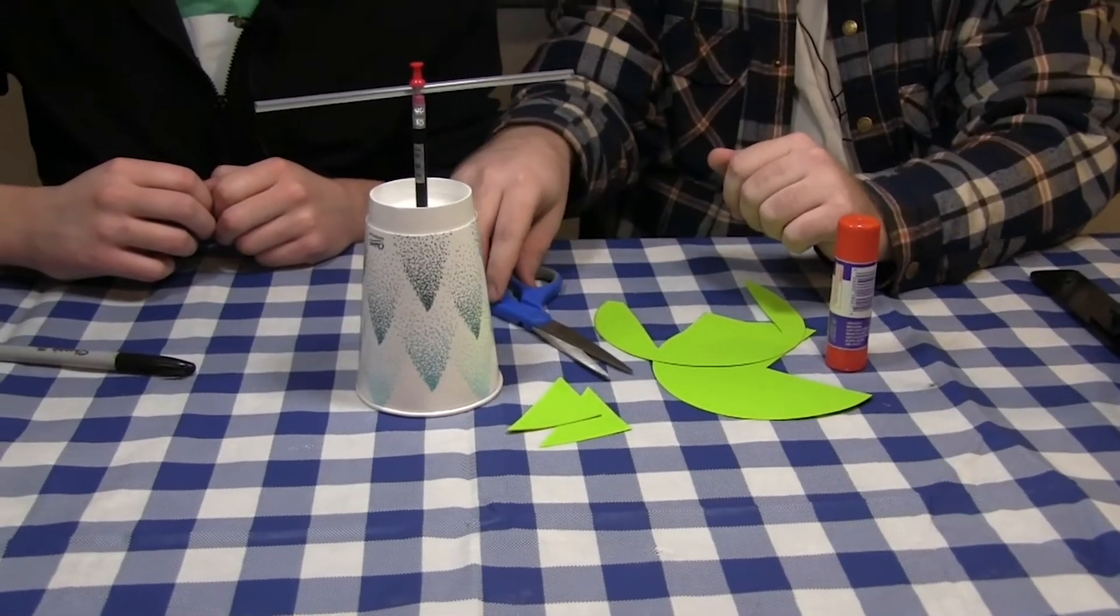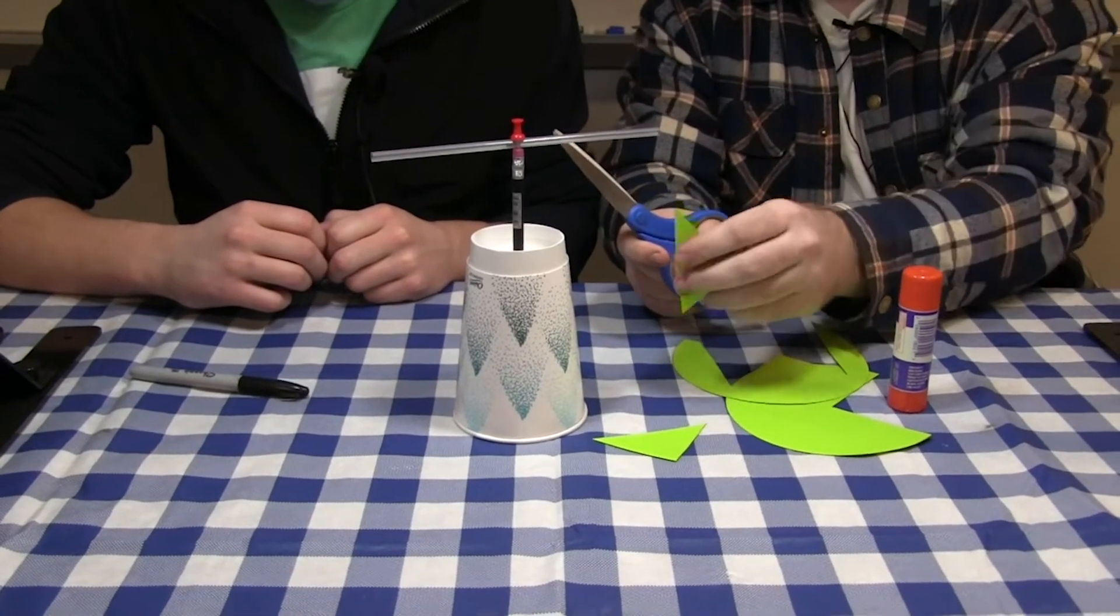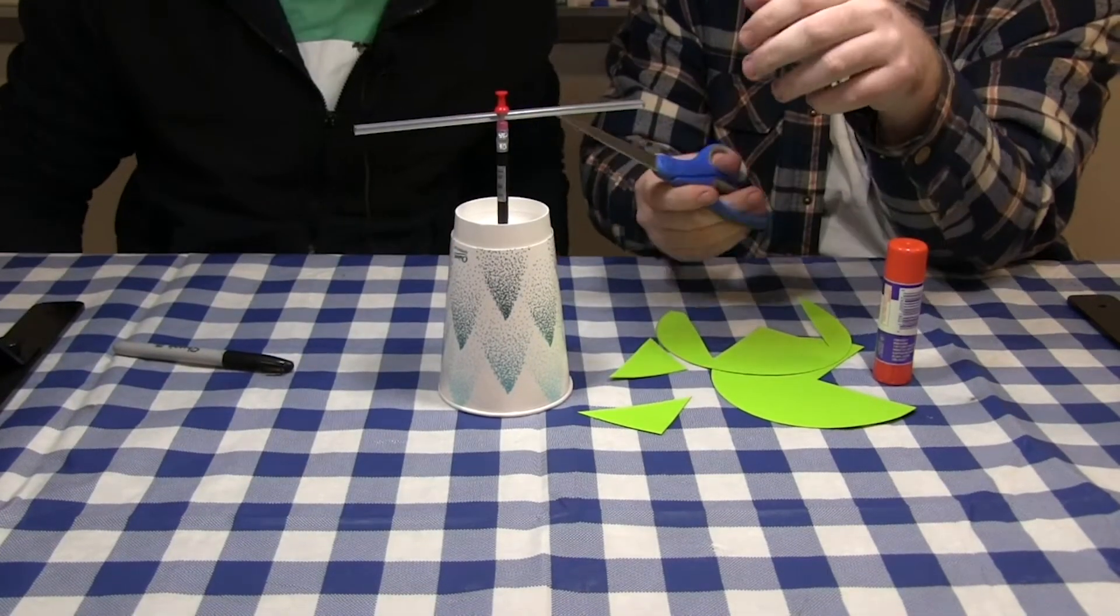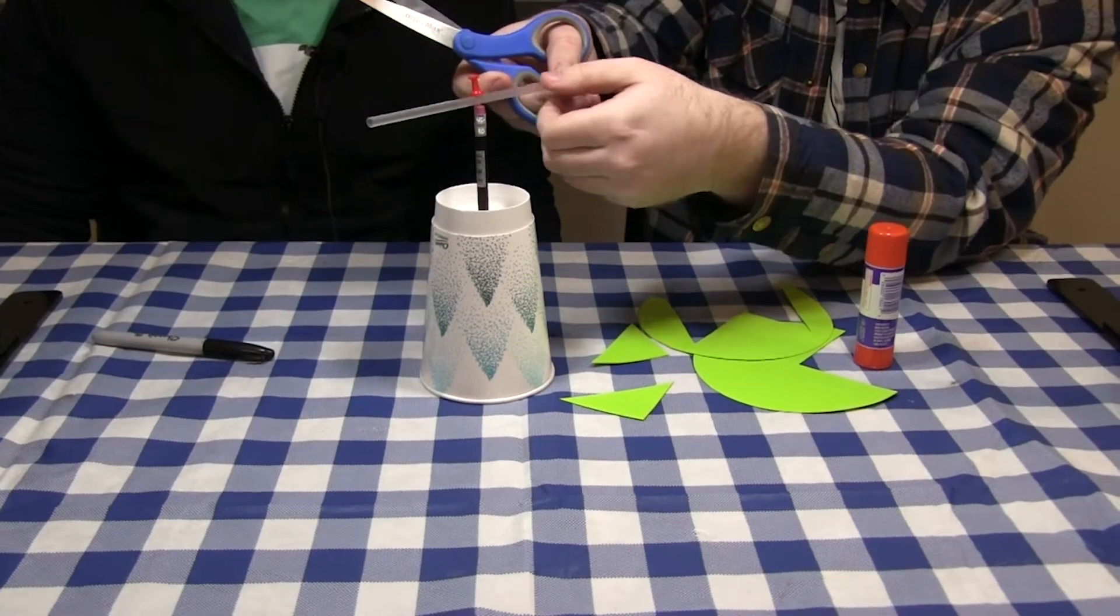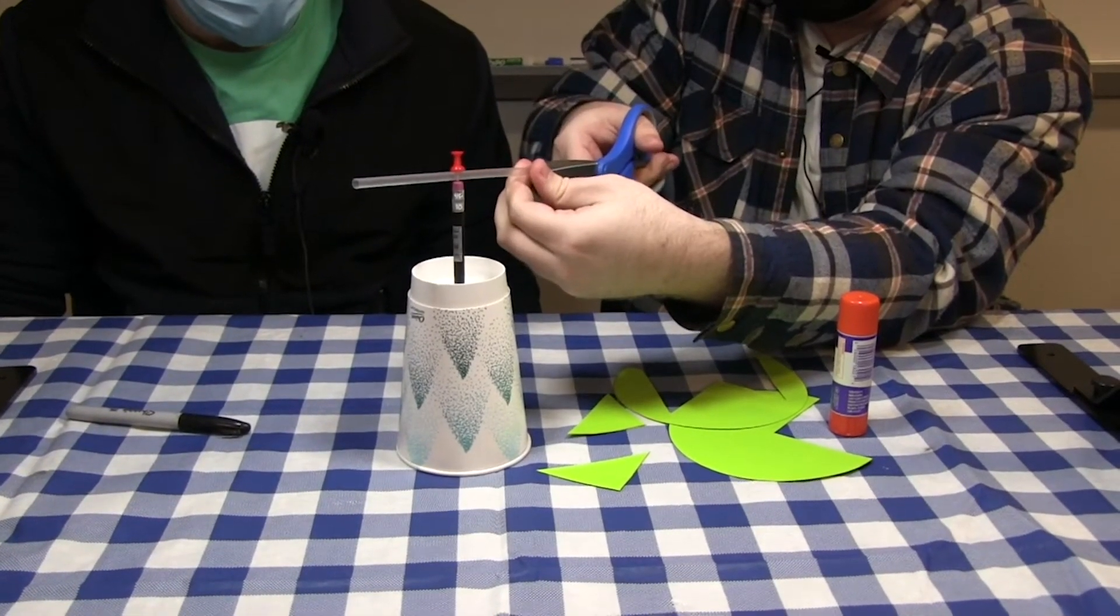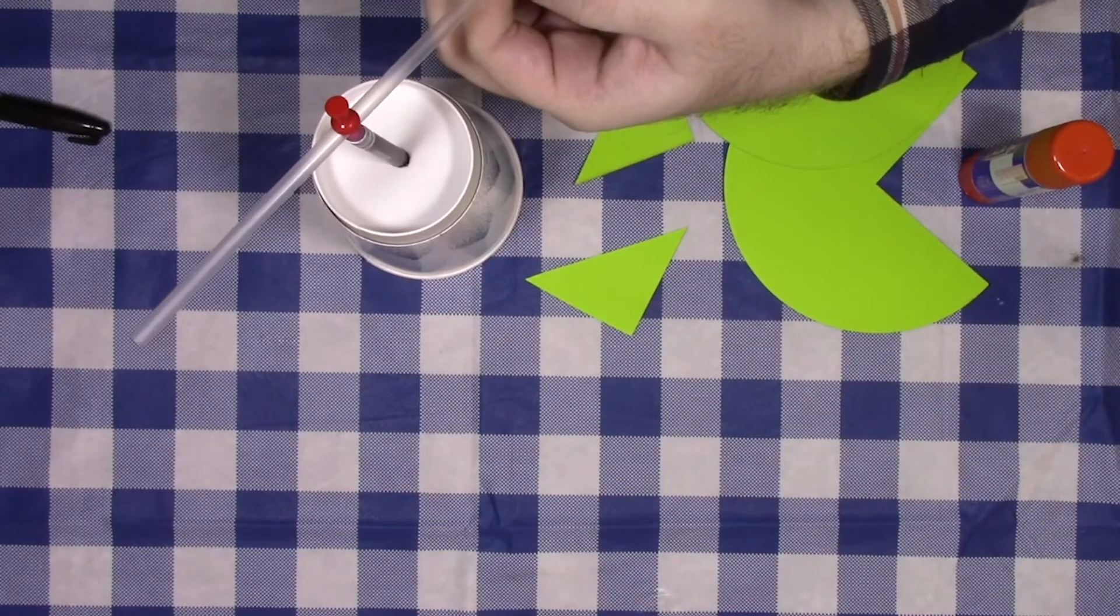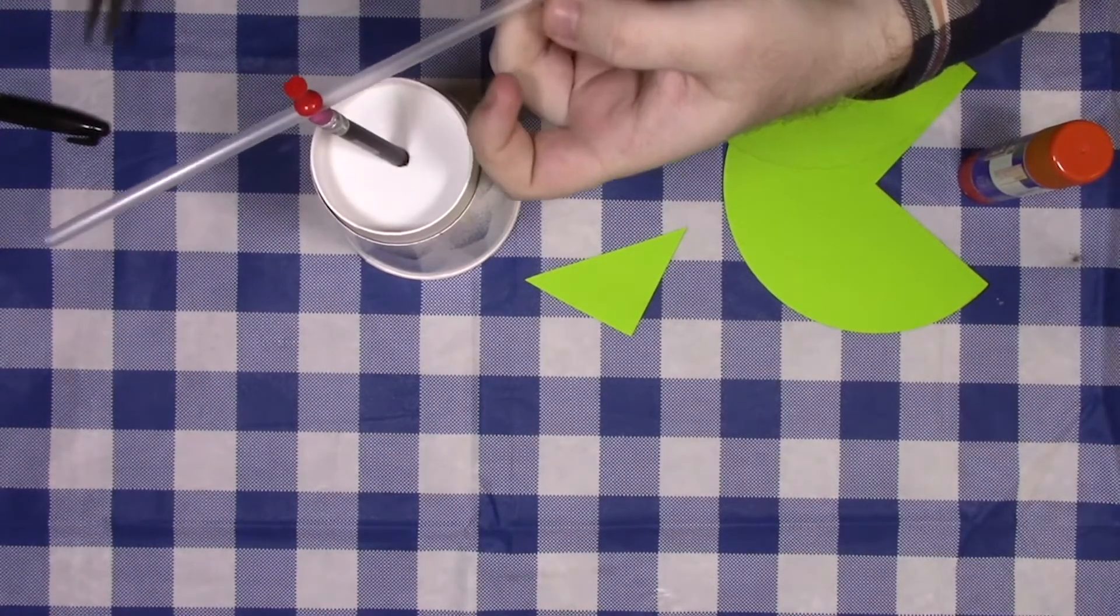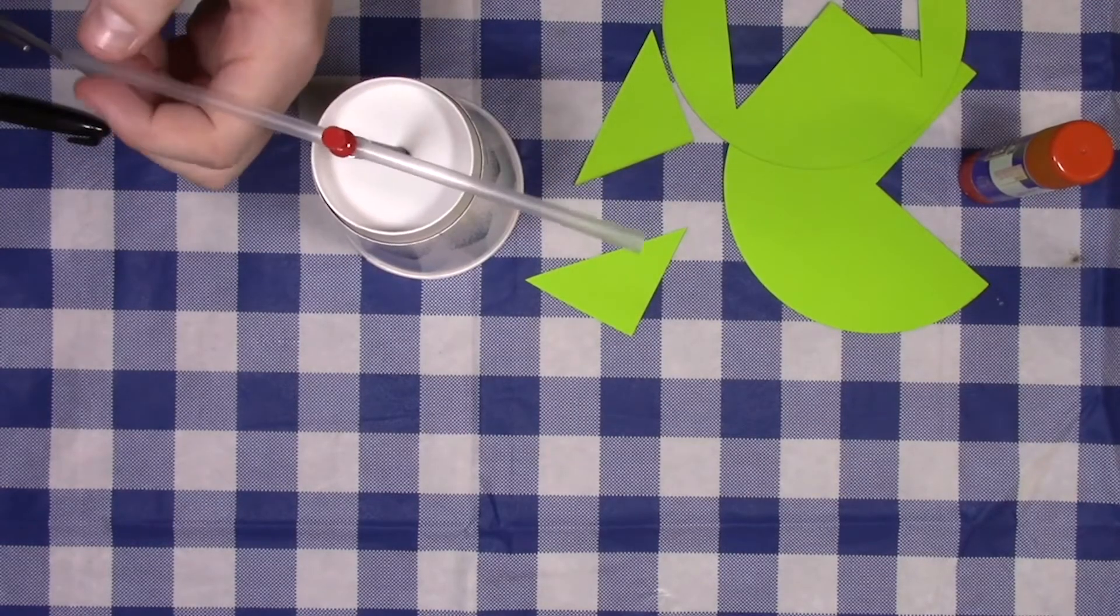Now what you can do to get your triangles onto your straw, which will operate as your wind vane, is take the straw and cut a slit once you flatten it out a little bit. Make sure not to cut your fingers during this step. Cut into the straw on one end, then repeat the same process on the other side.